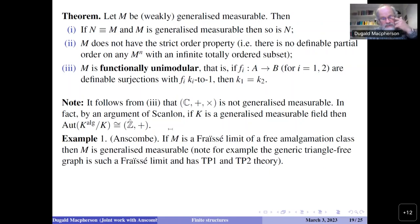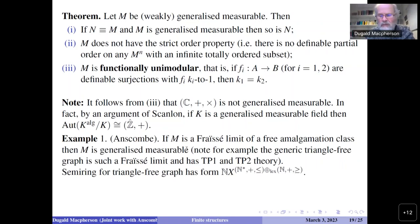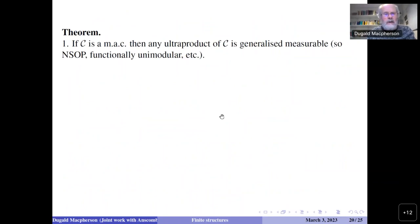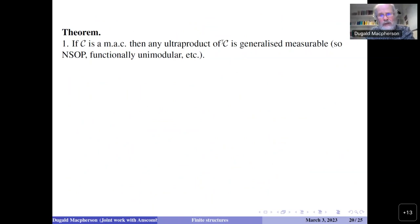An interesting example: the universal homogeneous triangle-free graph has bad model theory (TP1, TP2) but is generalized measurable — a result of Sylvia Anscombe — with a rather strange measuring semi-ring. The expected connection holds: any ultraproduct of a multidimensional asymptotic class is generalized measurable. If you take an exact class (EMAC), where cardinalities are given exactly, the ultraproduct is measurable in an ordered ring, which has the consequence that a definable function from a set to itself is injective if and only if it is surjective.